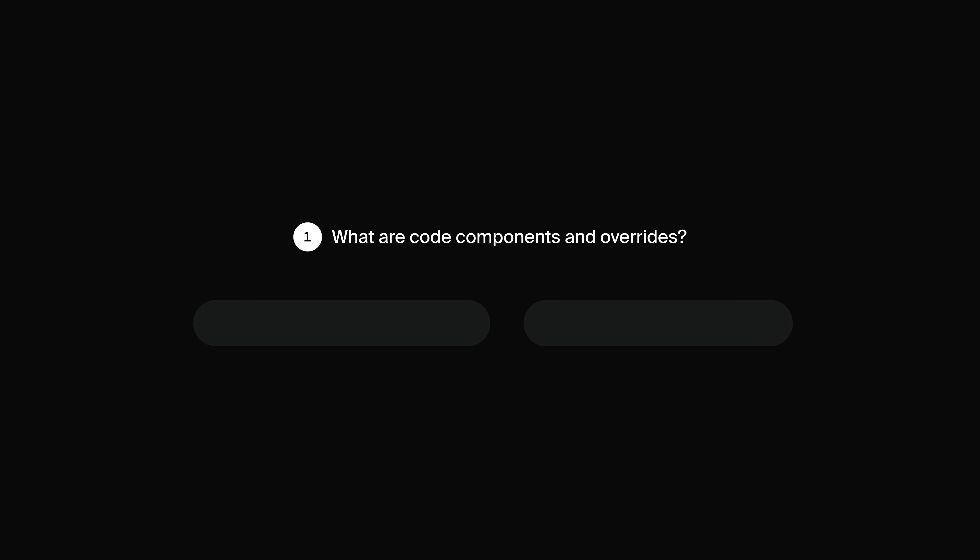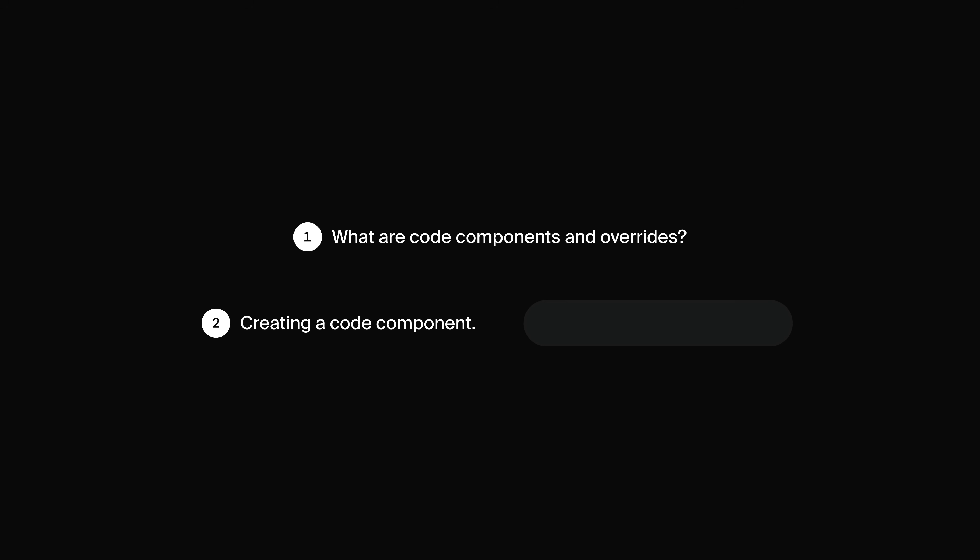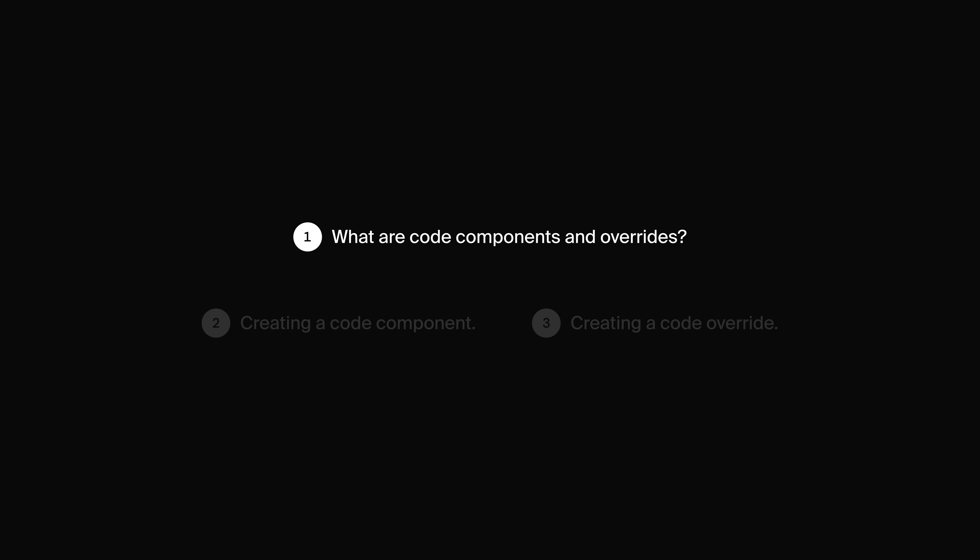I'm going to break this video up into three sections. In the first section I'm going to talk about what is a code component or a code override in Framer. Then in the second section we're going to use my special process to create a code component, and in the third section we're going to create a code override with the same process.